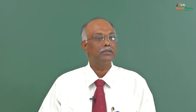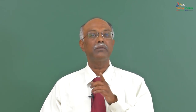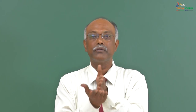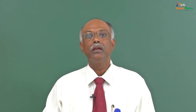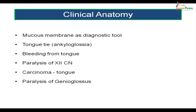We will be talking about a condition called ankyloglossia — when the frenulum of the tongue attaches the tongue to the floor of the mouth. We will also discuss bleeding from the tongue, paralysis of the hypoglossal nerve, carcinoma of the tongue, and paralysis of the genioglossus muscle. All these are parts of clinical anatomy which we will review at the end of this lecture. First, let us study the gross anatomy of the tongue.